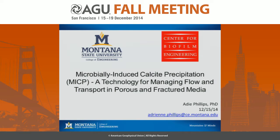I'm from Montana State University and I'm going to talk today about something a little bit different than all of the other talks that we've heard today. I'm going to talk about a technique that we use — novel microbial technology — to seal leakage pathways in the subsurface: managing flow and transport in porous and fractured media by inducing calcite precipitation, essentially making biocement.